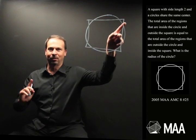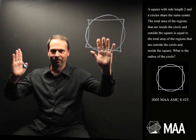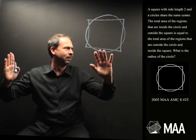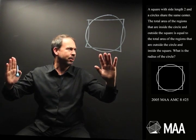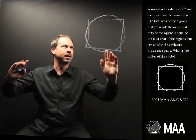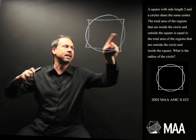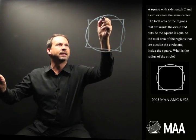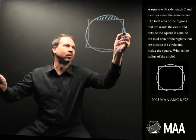All right, so we're going for the radius of the circle and we're given some weird information. Now what was that weird information again? I'm going to say it again. The total area of the regions that are inside the circle and outside the square. So you'd be inside the circle and outside the square. That's this region, it's inside the circle, outside the square.